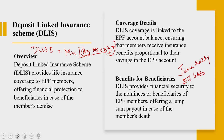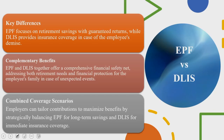When you look into the DLIS — the deposit linked insurance scheme — it has certain differences with respect to EPF. EPF focuses on retirement savings with guaranteed returns, while DLIS provides insurance coverage in case of an employee's demise. This is the significant difference between both schemes. There are complementary benefits: EPF and DLIS together offer a comprehensive financial safety net addressing both retirement needs and financial protection.